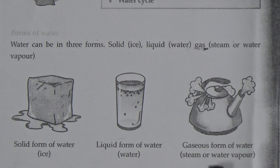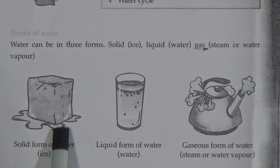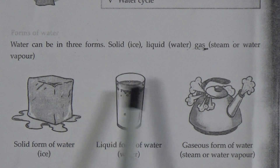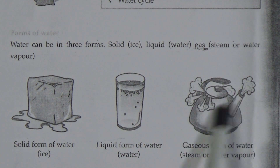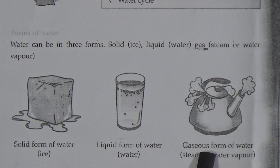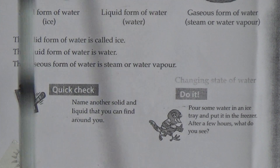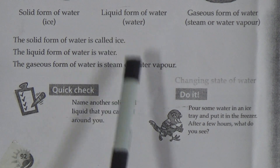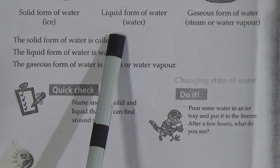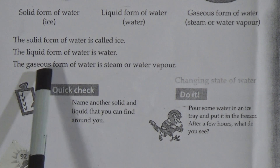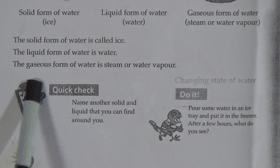Here is a picture of the three forms of water. You can see the ice — the solid form of water. Here is the liquid water — the liquid form of water. And here is the gaseous form of water. When the water is heated, vapor comes out, which is called the gaseous form — steam or water vapor. The solid form of water is called ice. The liquid form of water is water. The gaseous form of water is steam or water vapor.